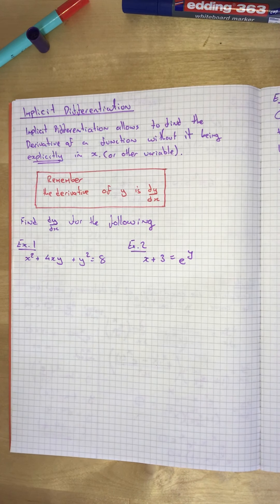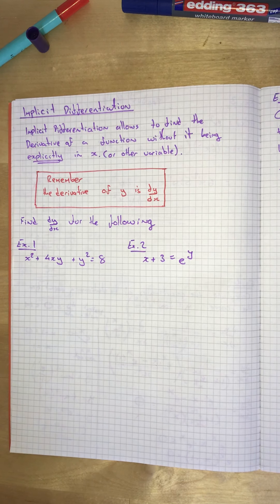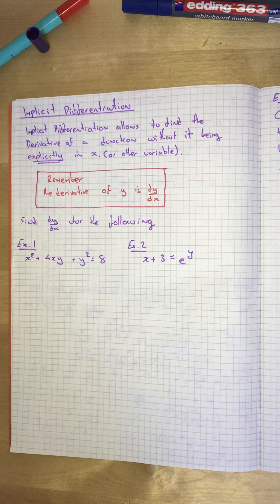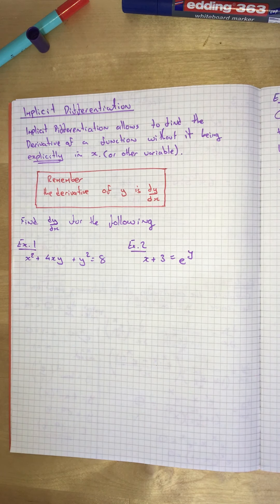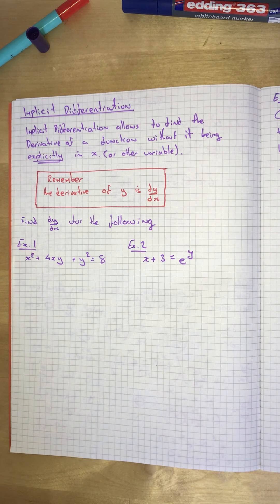In this video we're going to talk about implicit differentiation. Firstly, that word implicit — implicit differentiation allows us to find the derivative of a function without it being explicitly in x or whatever variable it's in. You have been explicitly differentiating since you learned how to differentiate, but now we're going to learn how to implicitly differentiate. Previously you would have had to rearrange to get explicitly in x, however now we're going to learn that you don't need to do that.